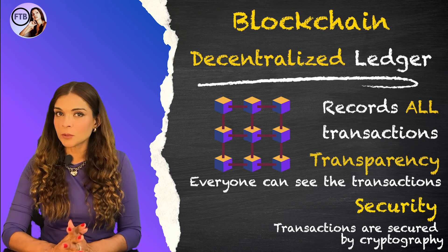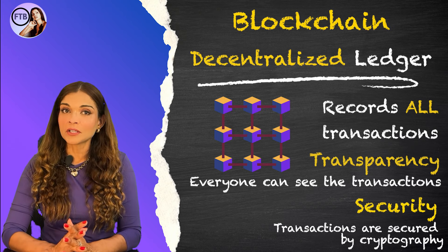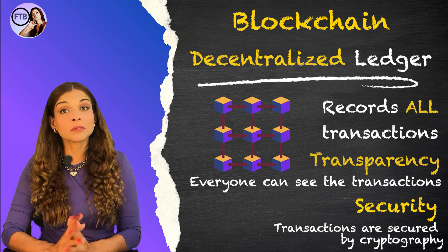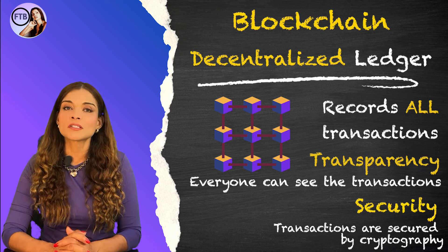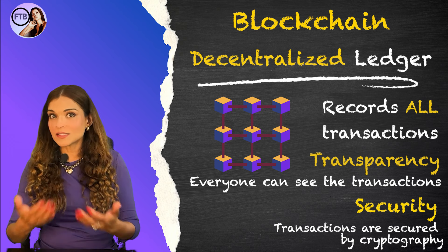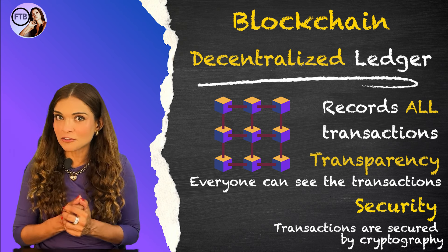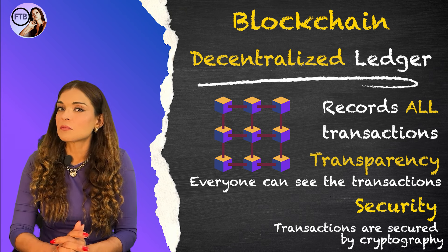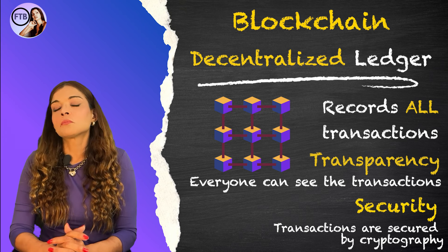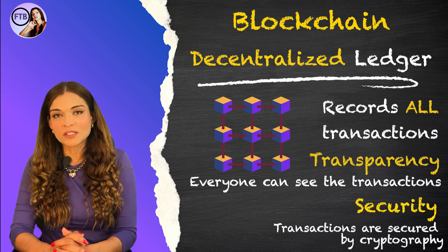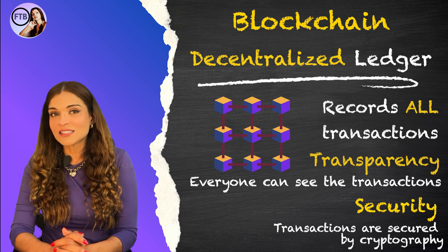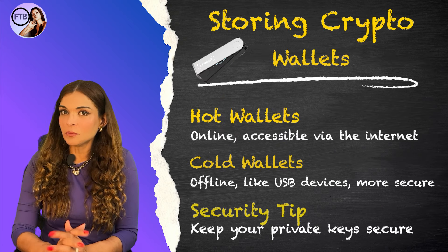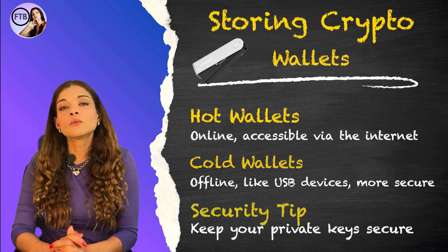Every cryptocurrency transaction is recorded on a decentralized ledger called a blockchain. This public database ensures all transactions are transparent and secure, thanks to cryptography. So while you can track where crypto goes, your personal information stays private. You can imagine blockchain as a giant spreadsheet that everyone has access to, but only you know which entries are yours.